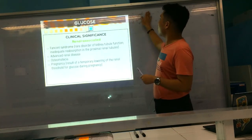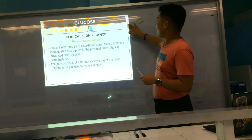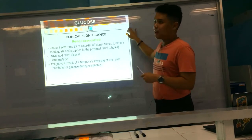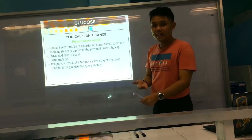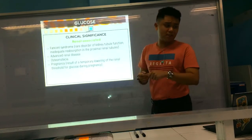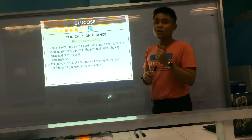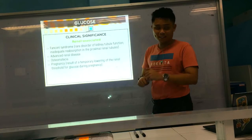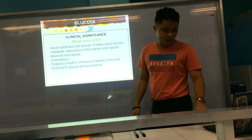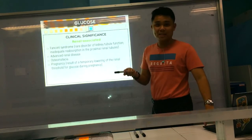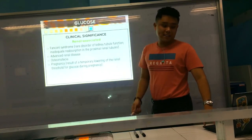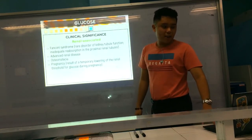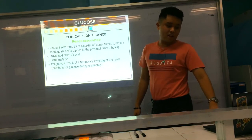But if the FBS is high and glucose is positive in the urine, then it is most likely diabetes mellitus or another hyperglycemia-associated disease.